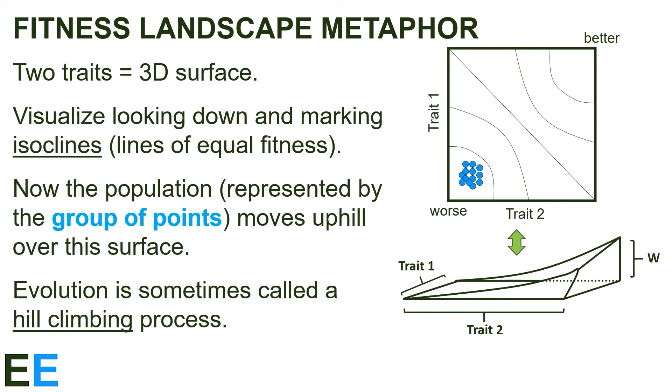The curved surface in the lower figure would be represented by the isoclines shown in the upper figure. Now the population, represented by the group of points, would move uphill over this surface, increasing both their trait one and trait two values over time as selection favors the individuals higher on the surface.